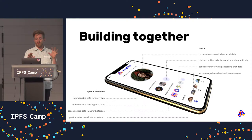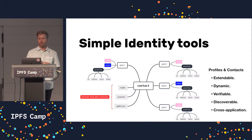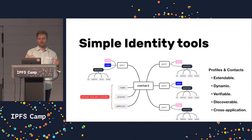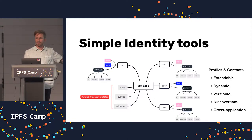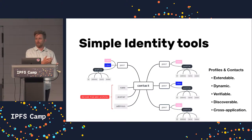A few of the examples of core tools we make available to developers are things like simple identity tools. In Textile, we don't take any extreme view about a Textile identity that you have to adopt, but we give every app access to things like a shared registry of public keys that people can attach display names to. That registry is actually searchable, so you can easily connect users across applications. Those identities are extendable — you can add things beyond display names and avatars for your application specifically. They're dynamic, so users can change and customize them for each application. They're verifiable and discoverable, and all things are cross-application.